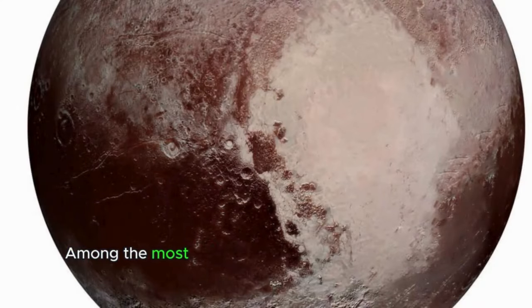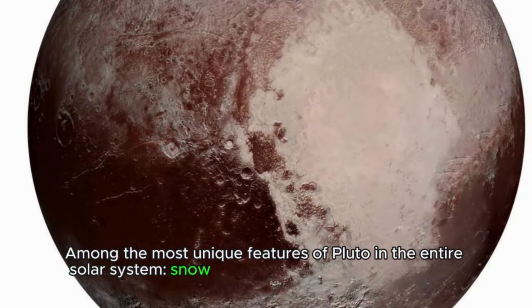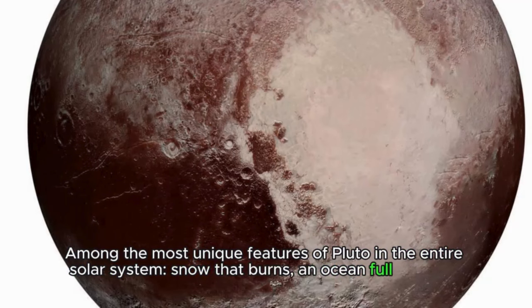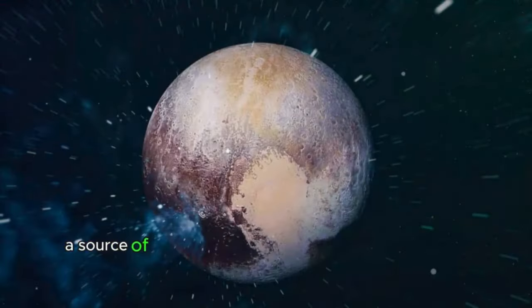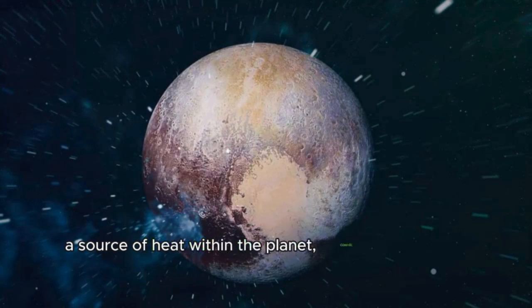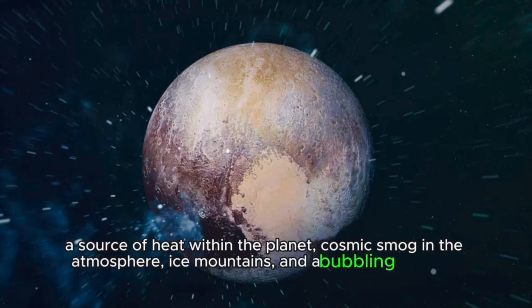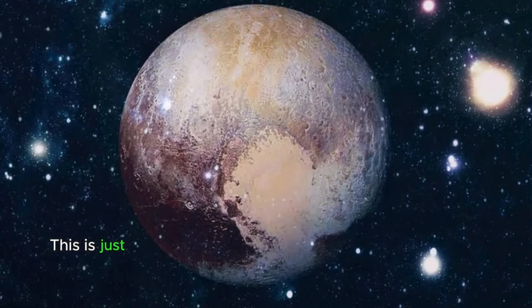Among the most unique features of Pluto in the entire solar system: snow that burns, an ocean full of water, a source of heat within the planet, cosmic smog in the atmosphere, ice mountains, and a bubbling nitrogen glacier. This is just a fraction of the incredible discoveries on Pluto.